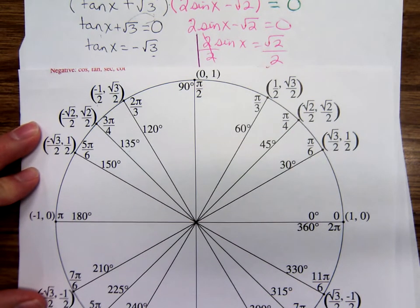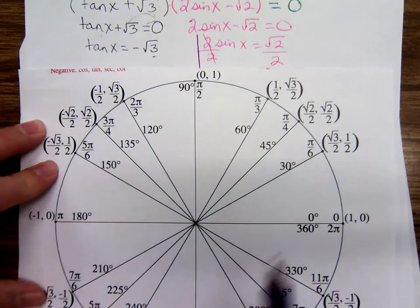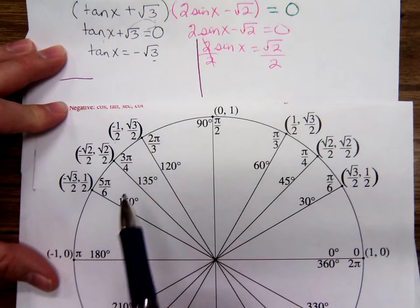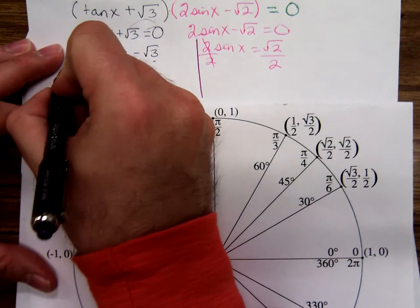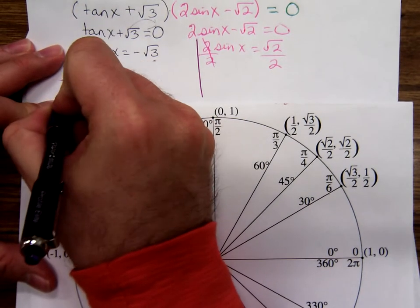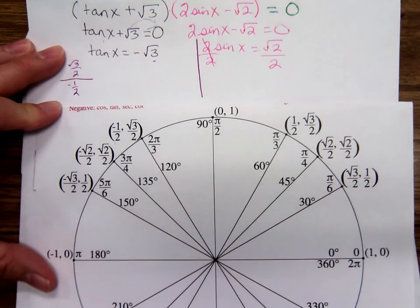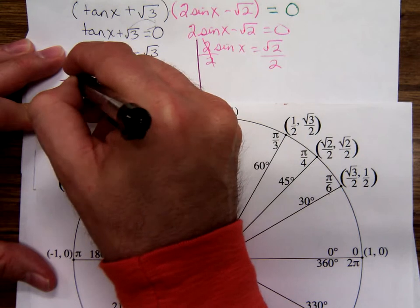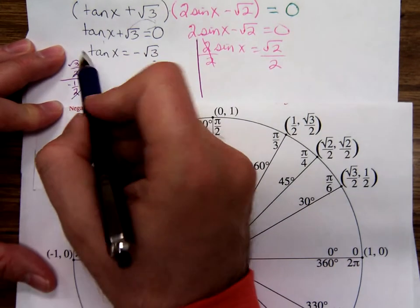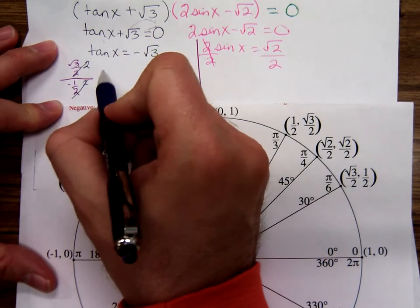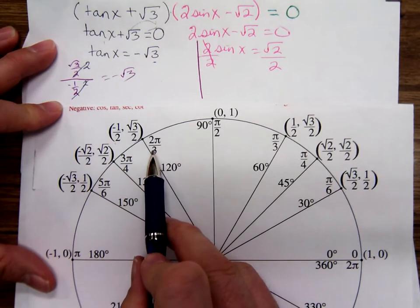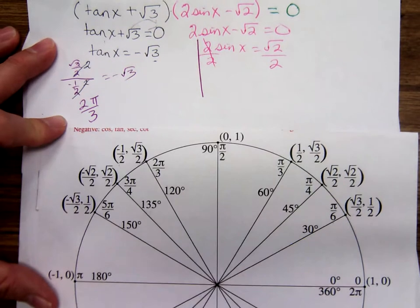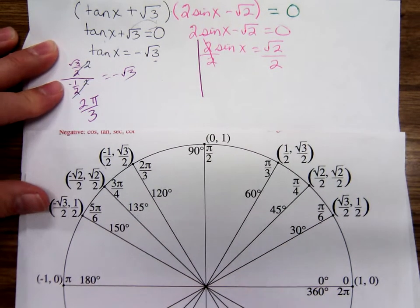2π over 3, that's right. Just to verify that, if I went sine over cosine, square root of 3 over 2 over negative one half, probably the fastest way, just multiply above and below by 2, so it would have square root of 3 over negative 1. So yes, 2π over 3. That's one of them.